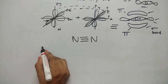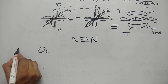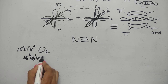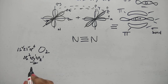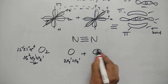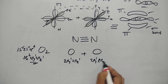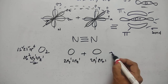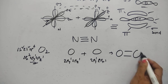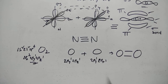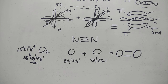For O2, oxygen has configuration 1s2, 2s2, 2p4 — specifically 2px2, 2py1, 2pz1. There are two unpaired electrons with different spins. The two electrons overlap to form a double bond. This involves one straight head-on Px–Px overlapping (sigma bond) and one lateral side overlapping (pi bond).